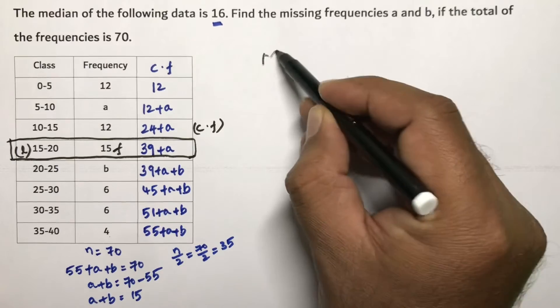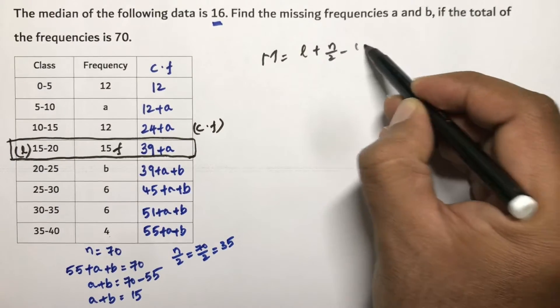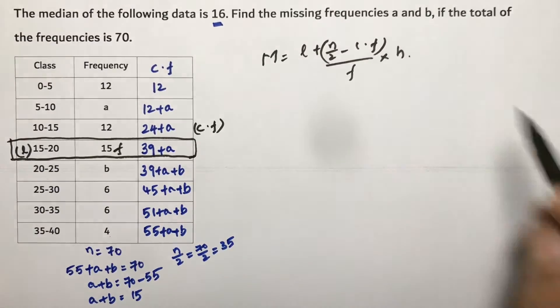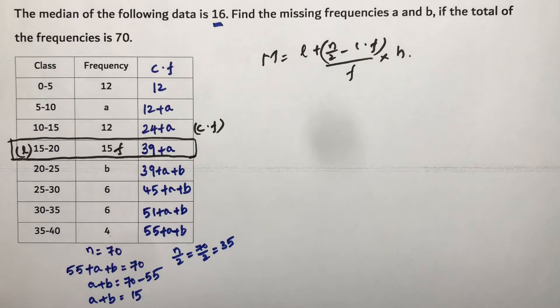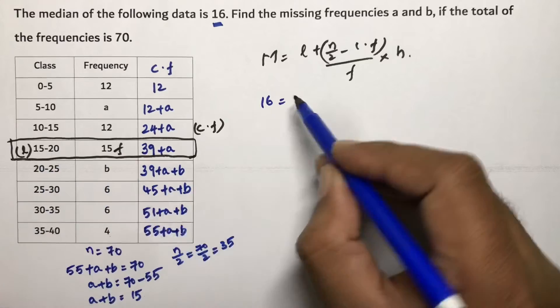By small f into H. So here the median value is 16, lower boundary is 15.